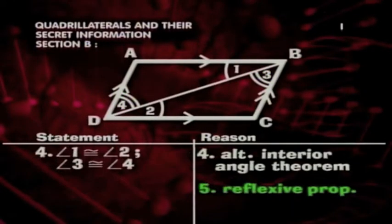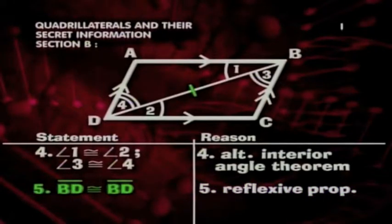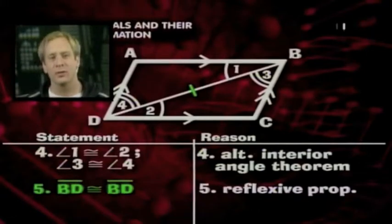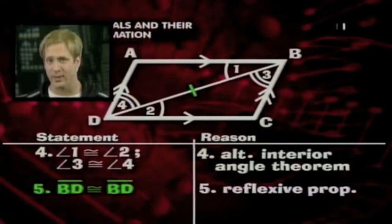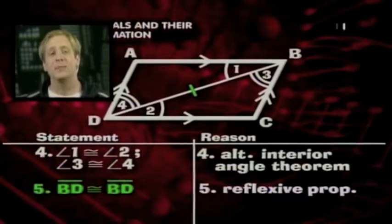So, for our fifth step, we'll use the ever-so-handy reflexive property to set BD congruent to itself. Now we have two pairs of congruent angles established. We can use the angle-side angle postulate if we can show that the included sides are congruent. This is simple, because side BD is shared by both triangles.